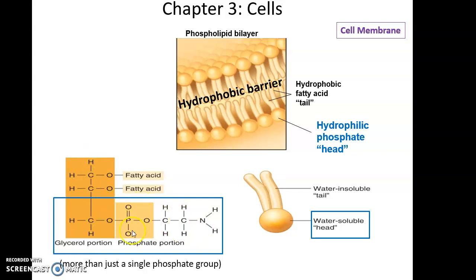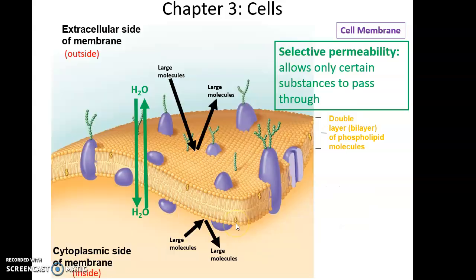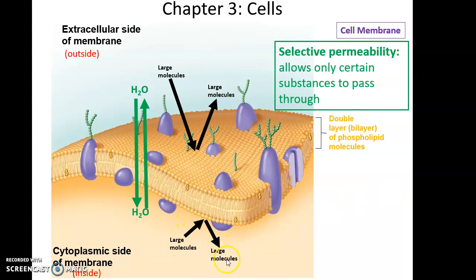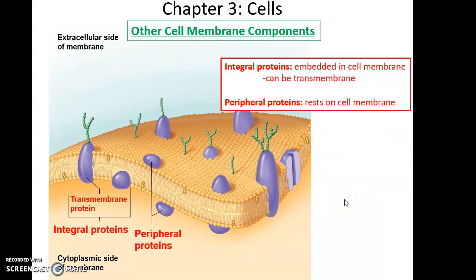The phospholipid consists of its phosphate group, its glycerol portion, and the two fatty acid chains coming off of it. This means the cell membrane is able to engage in selective permeability — some things can pass through easily. For instance, water can cross the membrane without a problem, while other things are blocked; large molecules cannot cross the phospholipid bilayer.